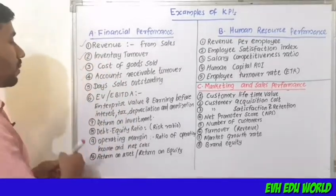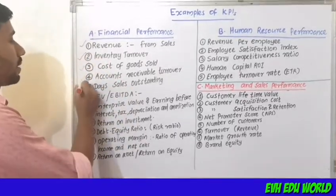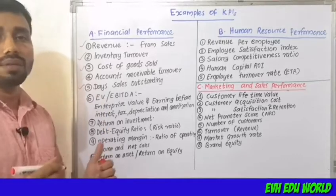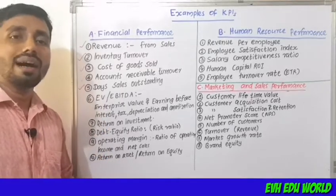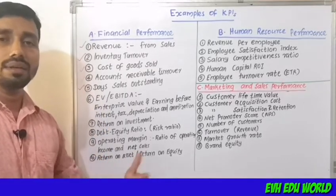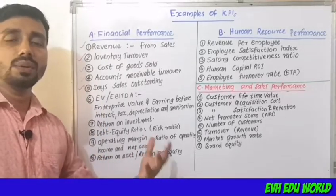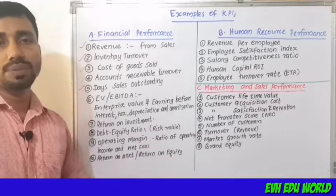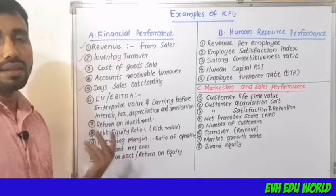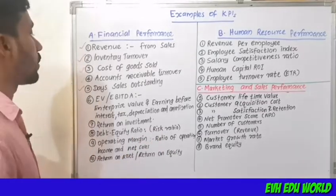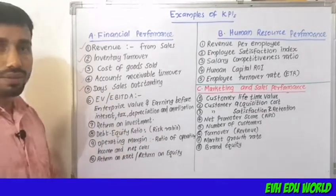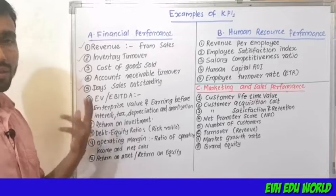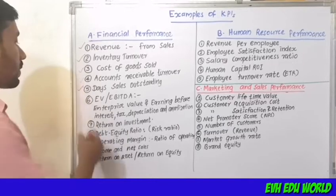The fifth one is days sales outstanding. When selling on credit, we look at the sales and how many days they remain outstanding.